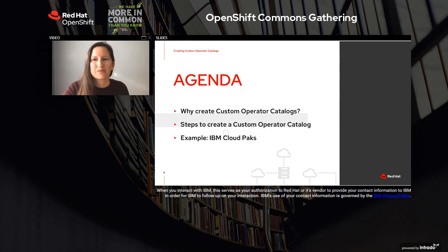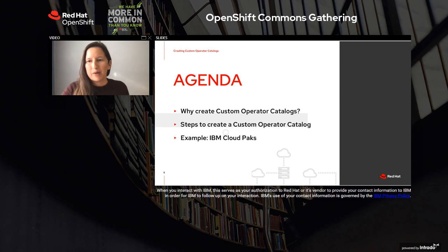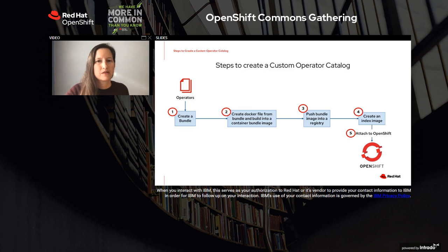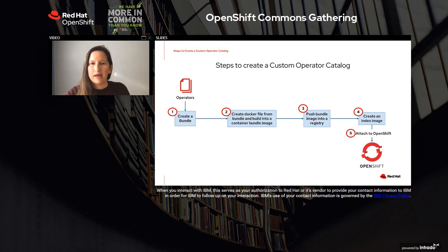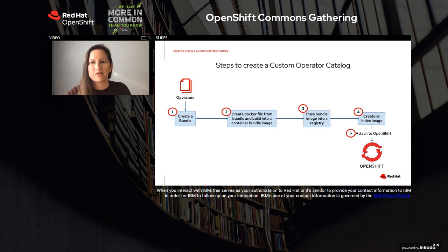Now let's walk through some steps on how to create a custom operator catalog. The simplified workflow is: you have your custom catalogs, you've created a bundle, you create your Dockerfile, and then you finally attach your catalog to OpenShift. I'm going to walk through each of these steps.